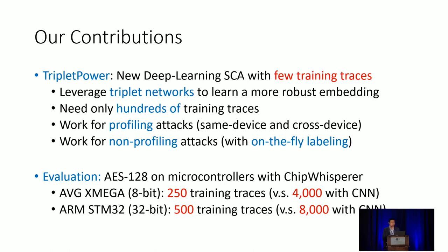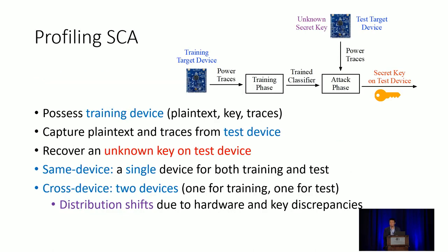In profiling attacks, we assume there are two devices: one training device and one target test device. The attacker captures plaintext and traces and knows the key from the training device to train a classifier. During the attack phase, the attacker captures plaintext and traces from the test device and tries to recover the key. We can have a same-device setting where a single device serves as both training and test device, or a cross-device scenario where the training and test devices are not identical.